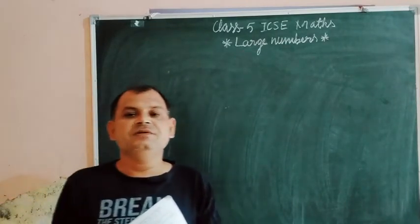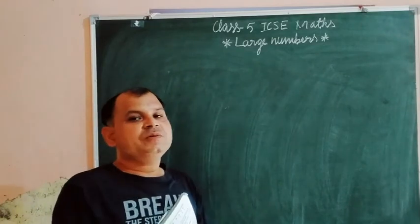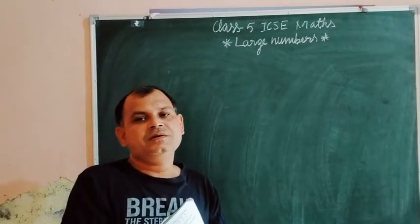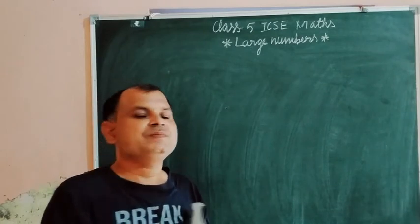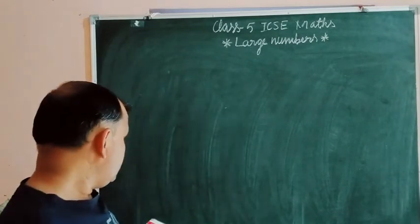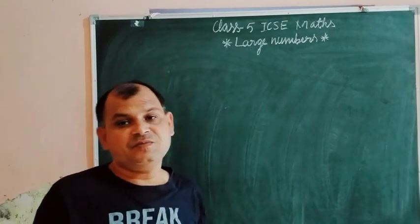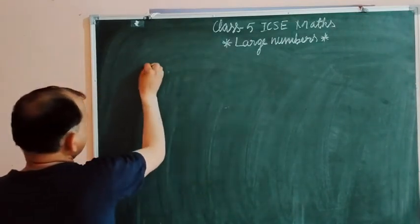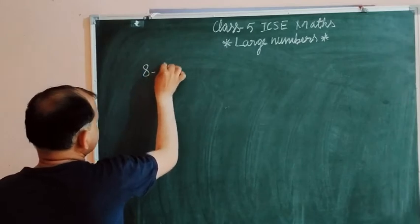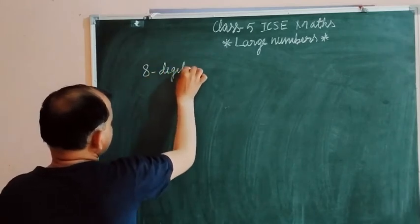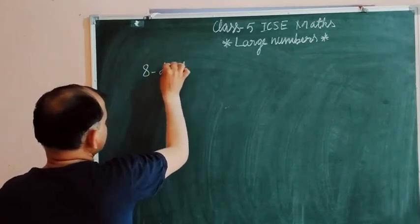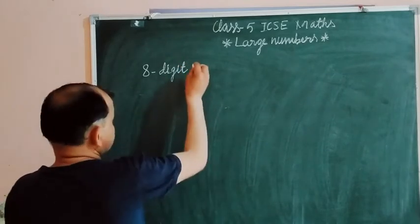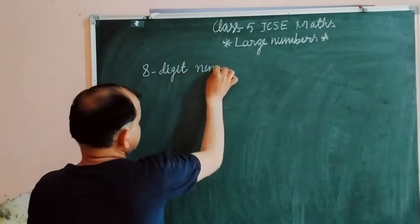This is the first chapter on numbers. You know that when we write digits nearby we get a number. If you put digits together you get a number, so here we have an 8-digit number.